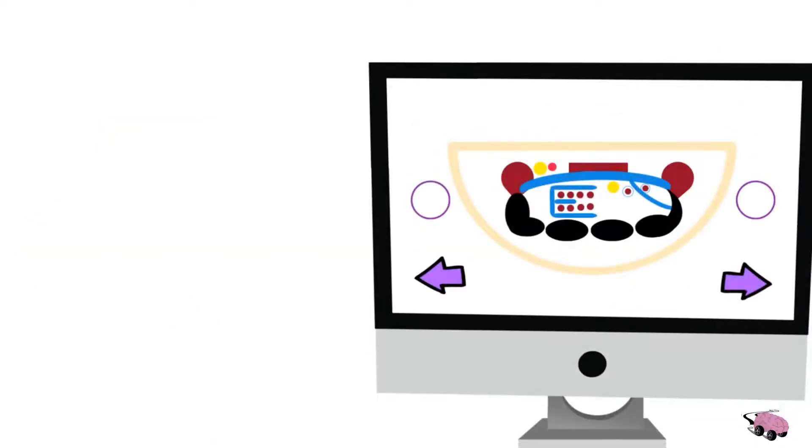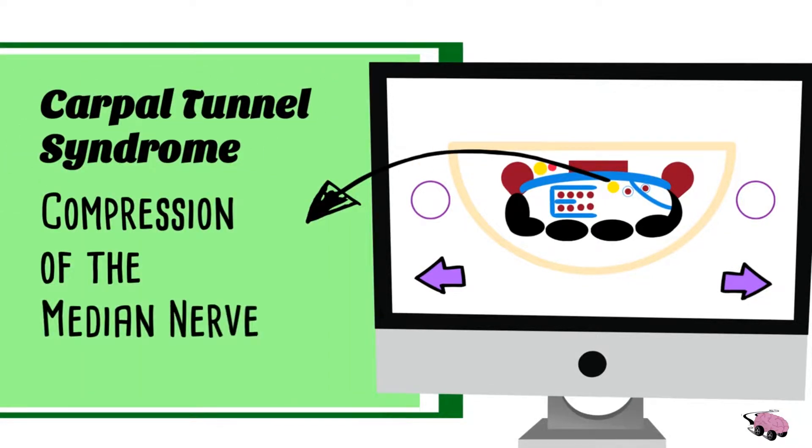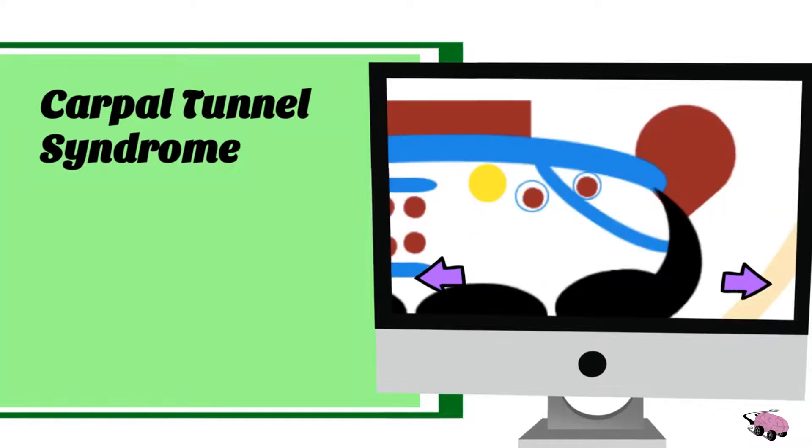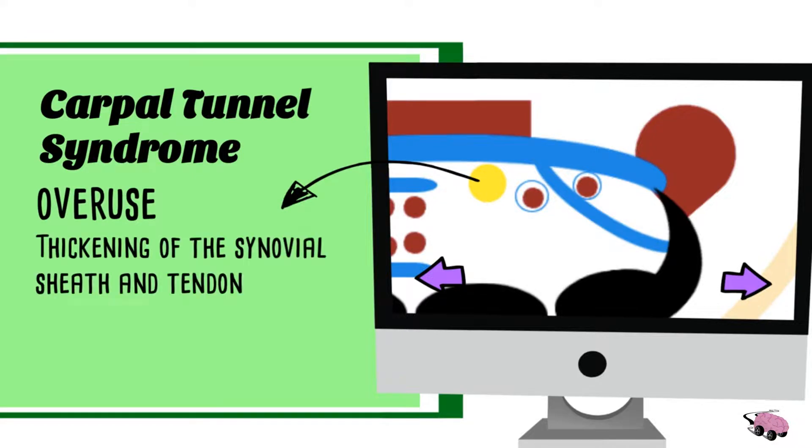One of the main significance of the carpal tunnel drawing is the carpal tunnel syndrome, which is the compression of the median nerve. Some of the ways carpal tunnel syndrome can come about is overuse, thickening of the synovial sheath and tendon, nerve damage, and many more.